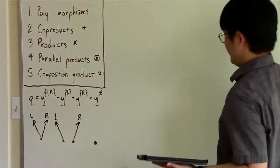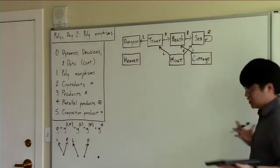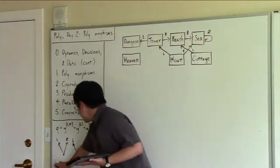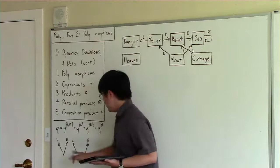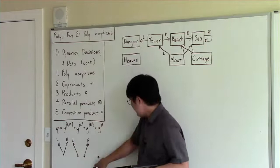Another way to view these polynomials was as systems with inputs and outputs, or as decisions that we were making. One way you can think of this polynomial is that we have this kind of menu of possible decisions. If we're at this decision, we can choose to either go left or right. If we're at this decision, we have to go left - that's our only choice. If we're at this decision, we have to go right. And if we're here, we can't do anything - this is an impossible decision, we're stuck.